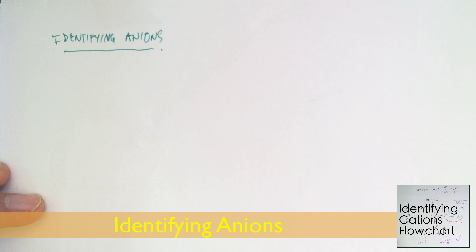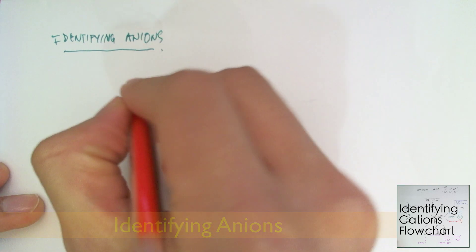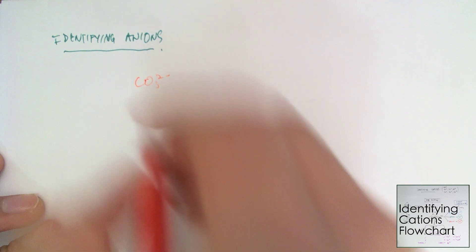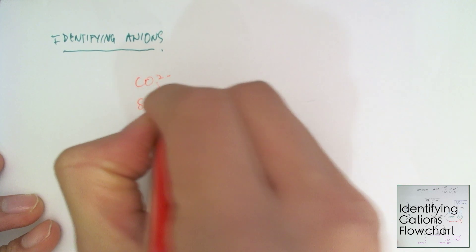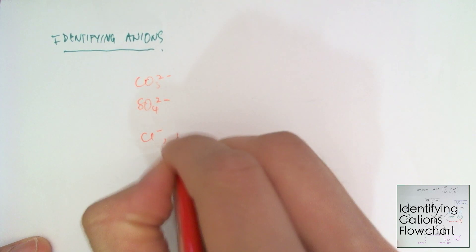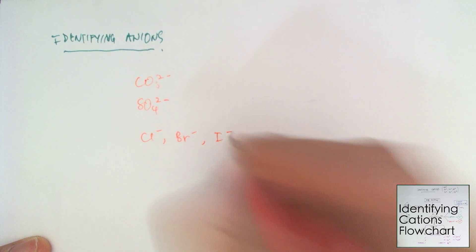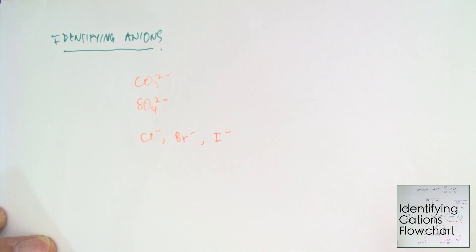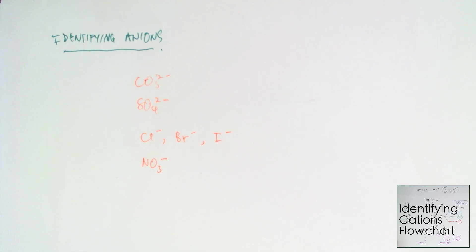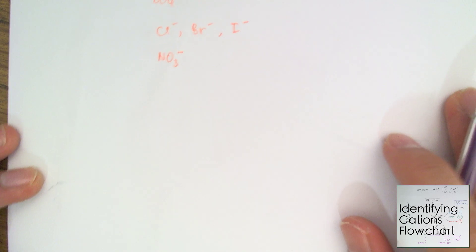The universe of anions that I'll be testing today are first off carbonates CO3²⁻, then we're going to look at sulfates, then the halides - chloride, bromide, iodide - and finally we'll test for some nitrates. These are the universe of anions that I'll be testing out. Let's get to it. First up, we'll be looking at carbonates.